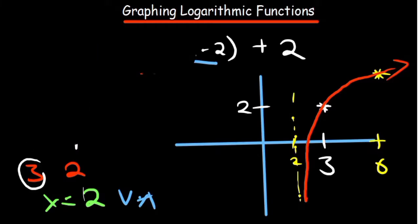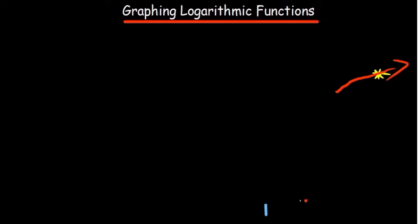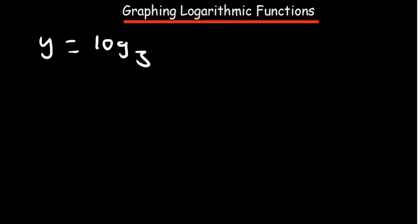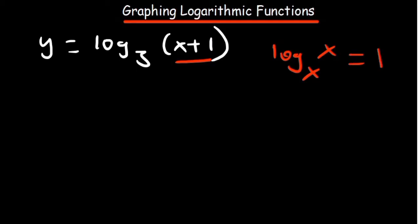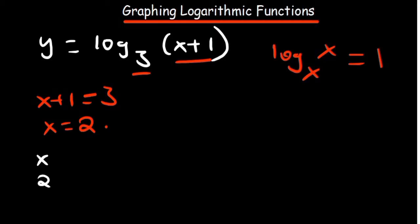Let's look at another example to understand more. Now let's say our y is basically equal to log₃(x + 1). There are just a few things we've talked about. We need to make sure what's in the brackets is equivalent to the base. So let's equate what's in the brackets to 3, because that's the base we have. So x plus 1 equals 3, meaning x equals 2. When x is equal to 2, our y is going to be 1. Since there's nothing added outside, it's just 1.